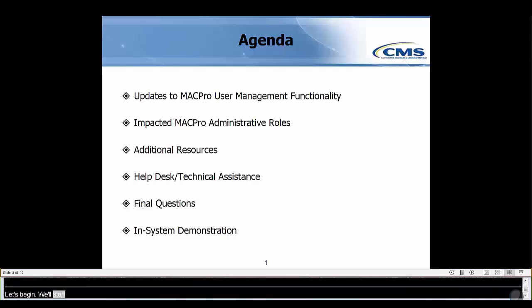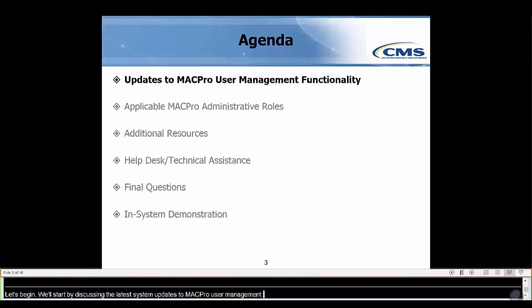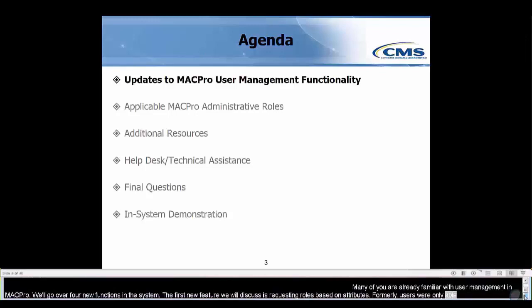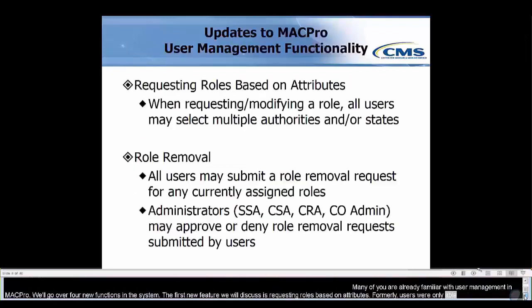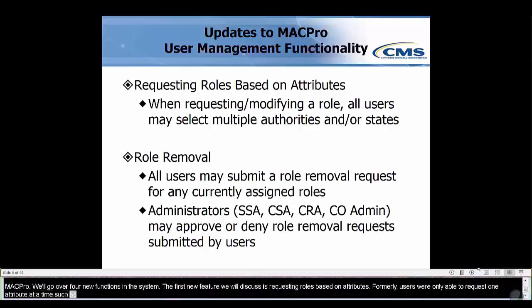We will start by discussing the latest system updates to MACPro user management. Many of you are already familiar with user management in MACPro. Today, we'll go over four new helpful functions available in the system. The first new feature we will discuss is requesting roles based on attributes. Formerly, users were only able to request one attribute at a time, such as health homes or adult quality measures. Now, all users may select more than one authority or state at a time when requesting a new role.